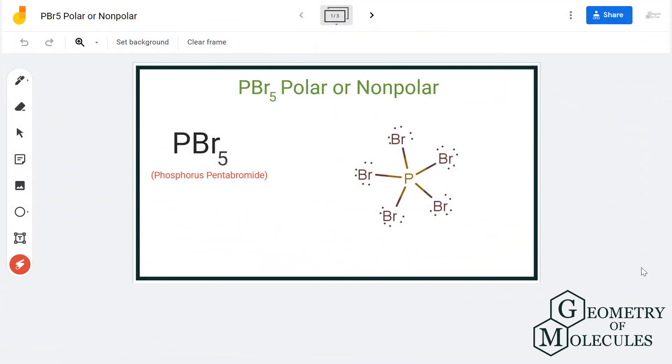Hi guys, today in this video we are going to determine the polarity for the PBr5 molecule. It's the chemical formula for phosphorus pentabromide and is made up of one phosphorus atom and five bromine atoms. To understand its polarity,